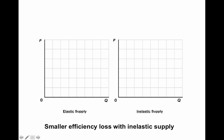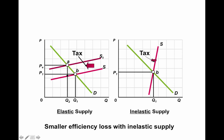Now let's take a look at supply. With relatively elastic supply, producers are able to pass the majority of the tax burden on to consumers. But with relatively inelastic supply, consumers bear very little of the tax and producers have to eat the whole thing — which is very interesting.